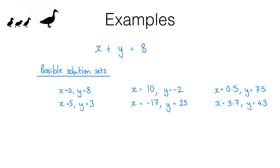Here are some examples — six examples — of solution sets. There are infinitely many, but let's see what we mean by solution set. If X was 0 and Y was 8, then X plus Y would be 8. But we don't know that that is the solution — why can't X be 5 and Y be 3? Or maybe X is 10 and Y is negative 2. We don't have to stick with whole numbers: 0.5 plus 7.5 also gives us 8. So these are all solution sets and there are infinitely many.